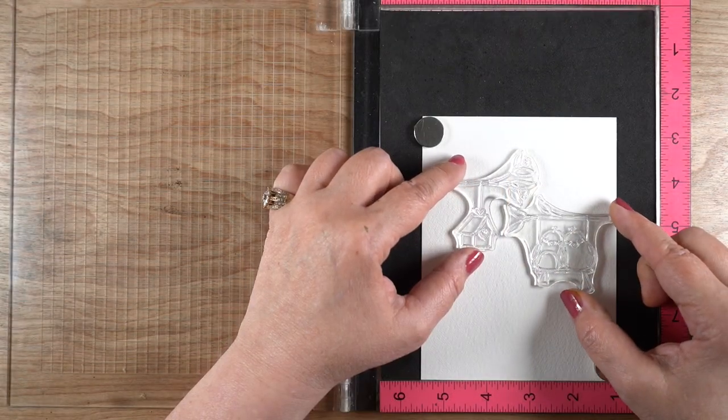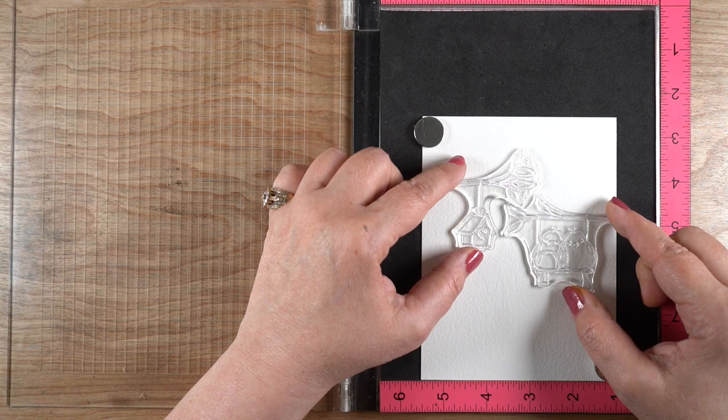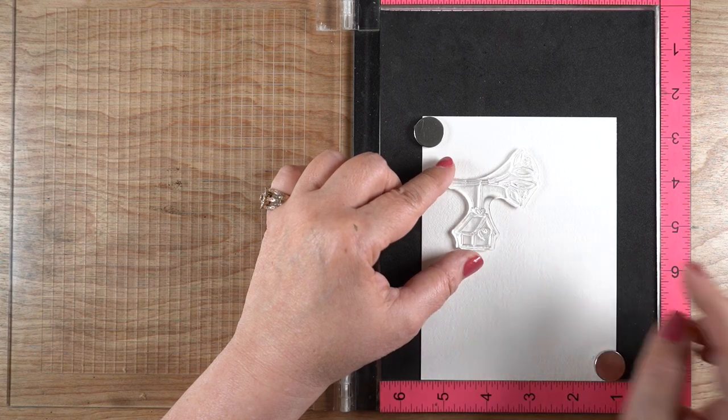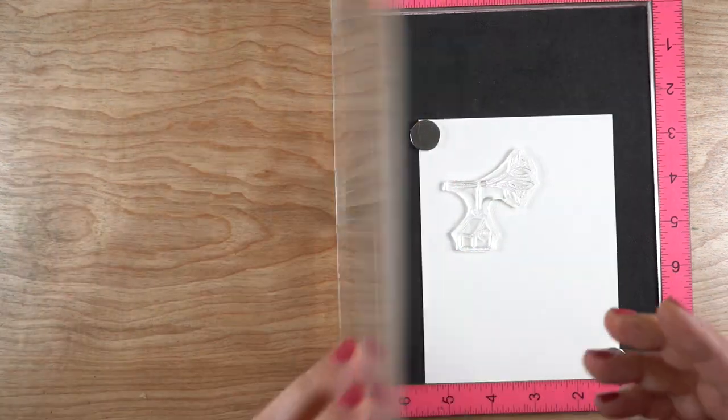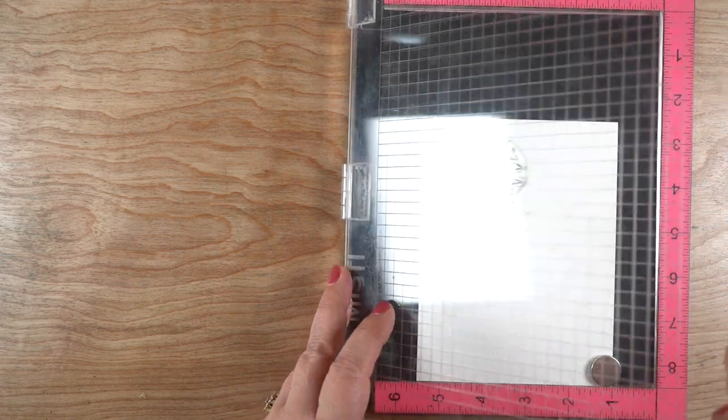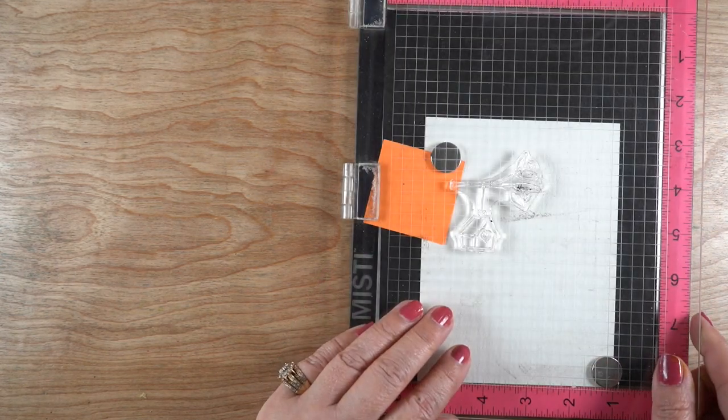I had a crazy idea for my masking using the Tweet Memories stamp set that has birds in it. There's a few things I wanted to do. This birdhouse I wanted it closer in from the edge and I wanted to extend that branch. I wasn't sure how far I was going to need it, but my paper is cut larger than the card front so I just wanted to give it some extra breathing room.